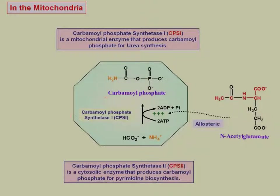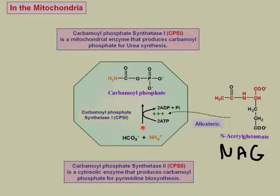Carbamoyl phosphate synthetase 1, CPS1, is allosterically activated by N-acetylglutamate, also called NAG. If NAG is low, then CPS1's activity is extremely slow, so you don't have a whole lot of carbamoyl phosphate being generated. But when you add NAG, it activates CPS1 and this process goes much faster.